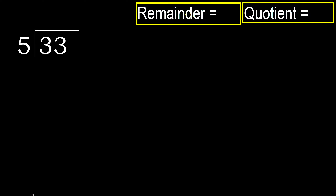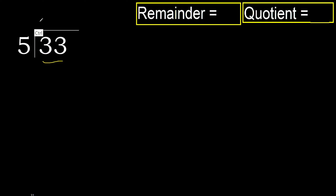33 divided by 5. 3 is less, therefore next. 33 is not less, therefore with 33 — 5 multiplied by which number is nearest to 33 but not greater? 5 multiplied by 7 is 35, which is greater. 5 multiplied by 6 is 30, which is not greater.